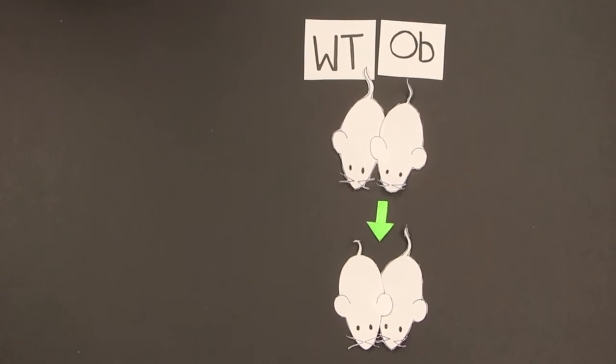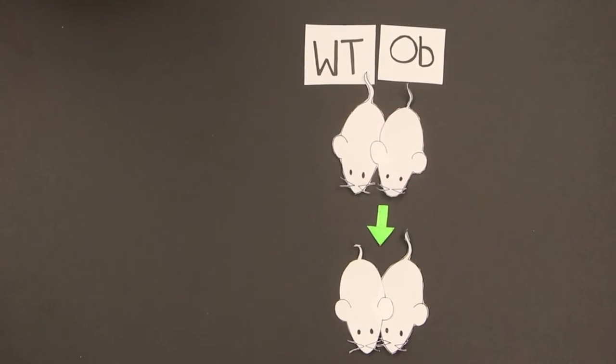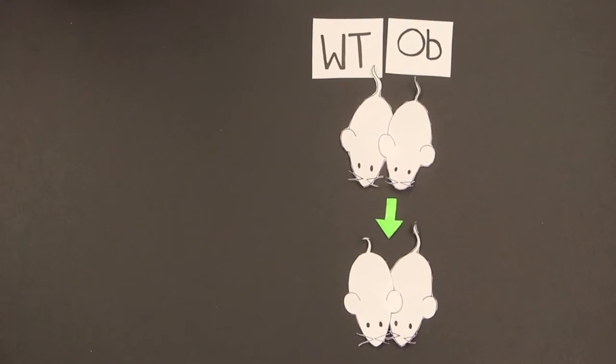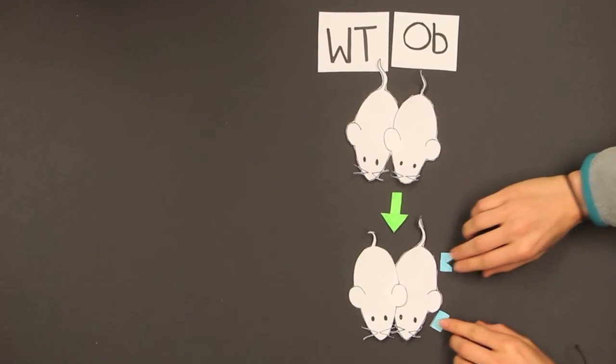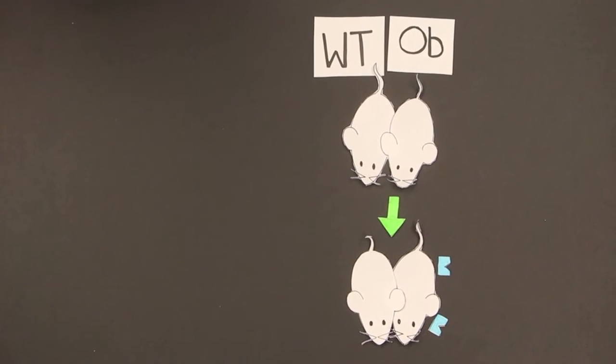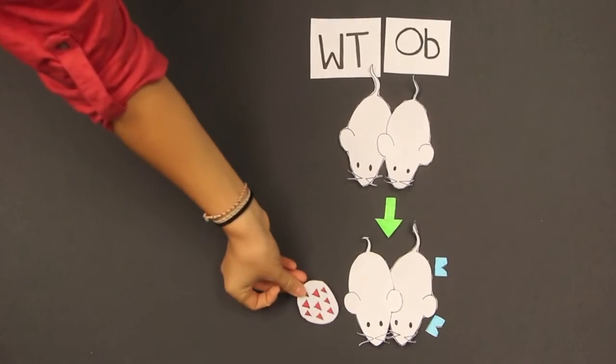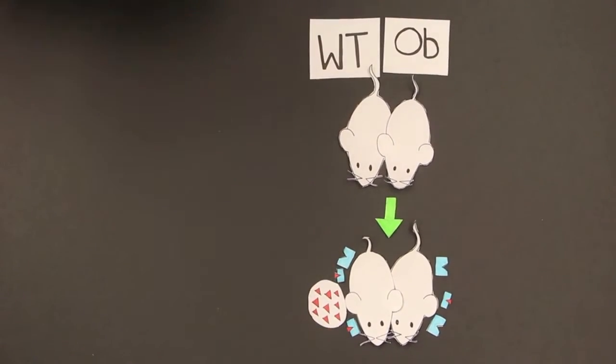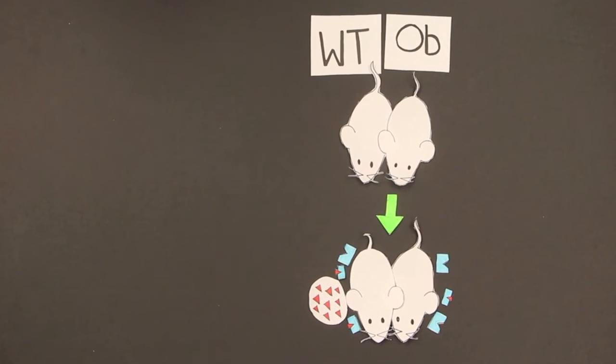Next, the OB and normal mice were combined. Both the OB mouse and the normal mouse had a slight but negligible weight gain. This is because the OB mouse has a receptor but does not produce a signal to stop eating. The signals supplied by the normal mouse helped the OB mouse control its eating. Both gained weight because the signal was diluted between two mice.